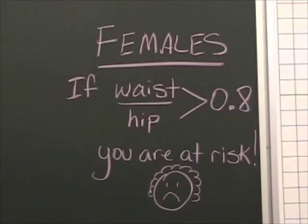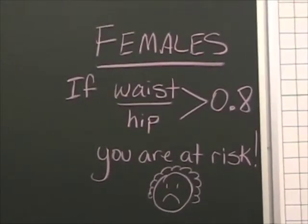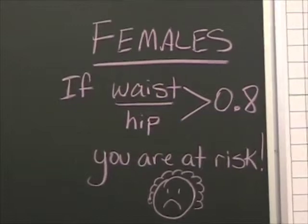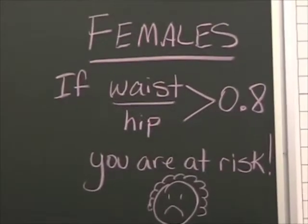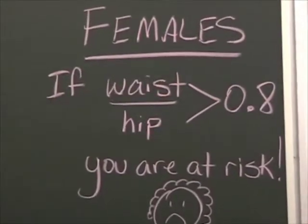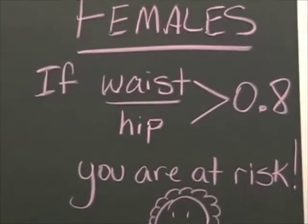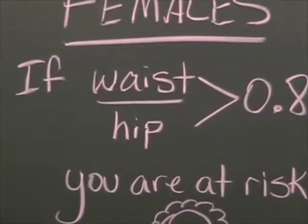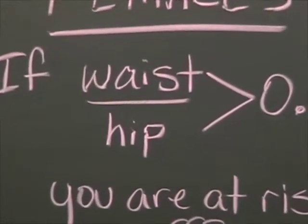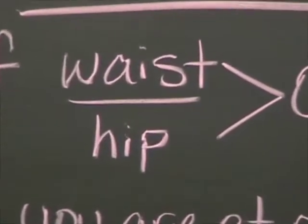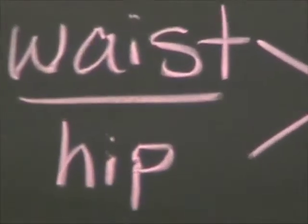Females have a different ratio. Their waist to hip measurement can't exceed eight tenths. That means their waist has to actually be smaller than their hips, or they are in danger for heart disease.